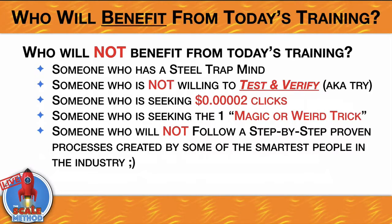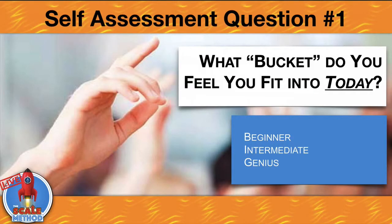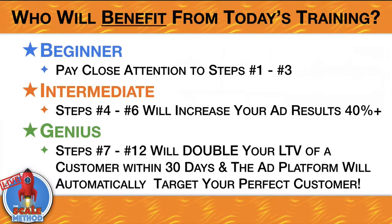Self-assessment question number one: what bucket do you feel you fit in today? Write it down — beginner, intermediate, or genius. Beginners should pay close attention to steps one through three. Intermediate, pay attention to steps four through six — this will increase your ad results by over 40%, many times increasing your revenue by well over 40%. The genius level, steps seven through 12, will double the lifetime value of a customer within 30 days, and the ad platform will automatically target your perfect customer.